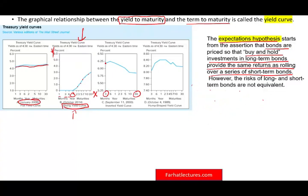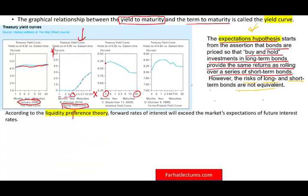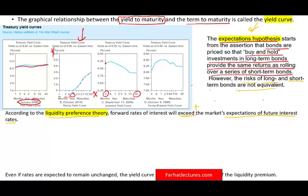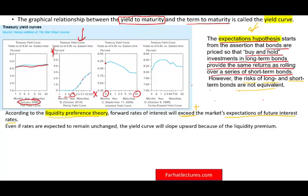In this session, we're going to look at another interpretation. According to the liquidity preference theory, forward rates will exceed the market expectation of future interest rates. Whatever you think about the future interest rate, the forward rate should exceed it — it should be higher. Even if rates are expected to stay the same, we always assume the future rate will be higher. Even if your expectation is 8%, 8%, 8%, 8%, because we are going into the future we have to add something to the rate. Therefore, the slope would be upward sloping.